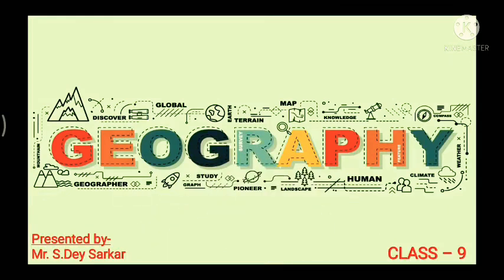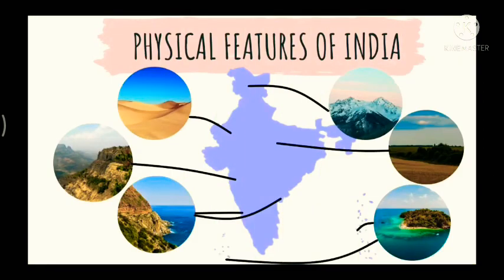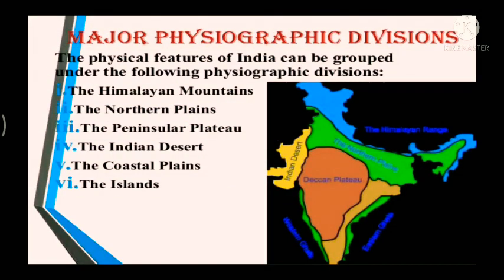Welcome back to another session of geography. Today we'll continue with the last segment of this chapter on the physical features of India. We've already discussed the Himalayan mountains, northern plains, and peninsular plateau. Today we'll start with the Indian Desert and complete the session with coastal plains and the islands.